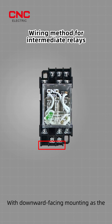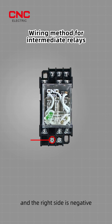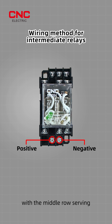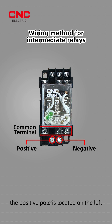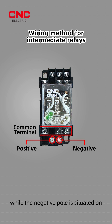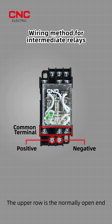With downward facing mounting as the reference, the left side is positive and the right side is negative, with the middle row serving as the common terminal. Specifically, the positive pole is located on the left side with the 11th pin, while the negative pole is situated on the right side with the 10th pin.